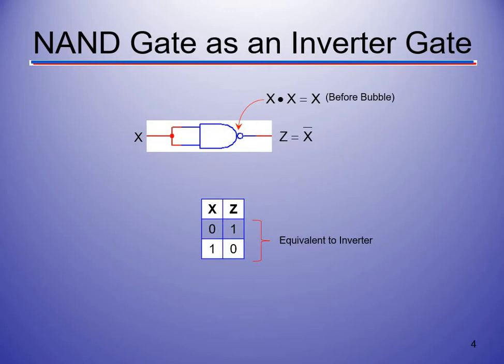We can use a NAND gate as an inverter. The input is a single variable X, so we put X into both inputs of the NAND gate. When we do that, we get X AND X, and then after the bubble we get NOT X — the X bar. So that's how we create an inverter: put in X and get back NOT X.